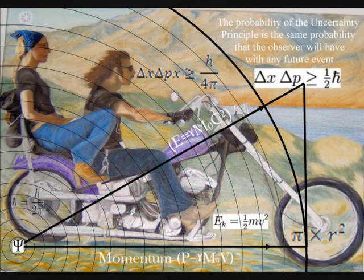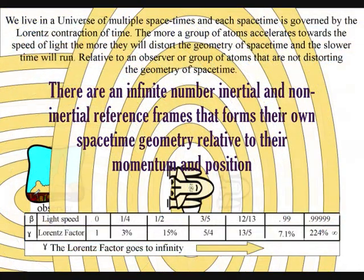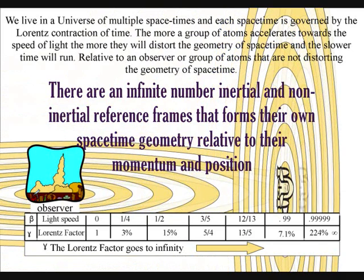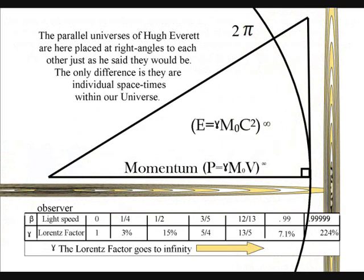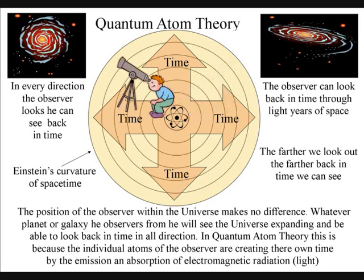In this theory there is no universal time, because the universe is made up of an infinite number of reference frames that have their own proper time relative to their momentum and position. Therefore we are all in a unique position at the centre of our own reference frame and can look back in time in all directions at the beauty of the stars.